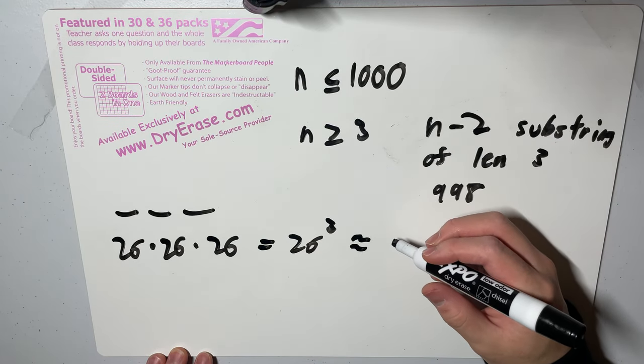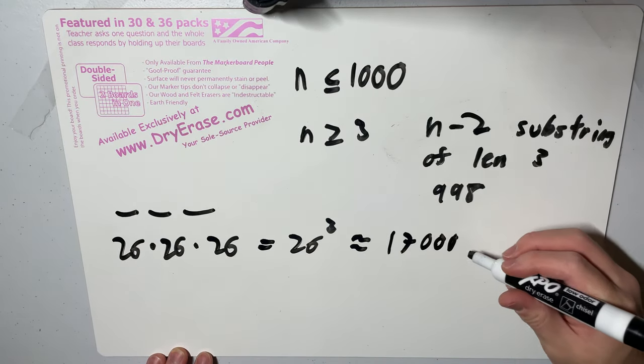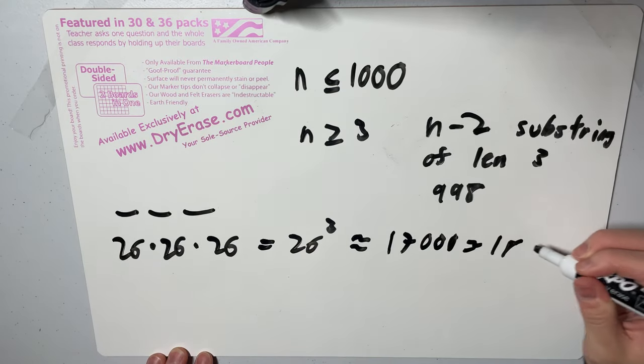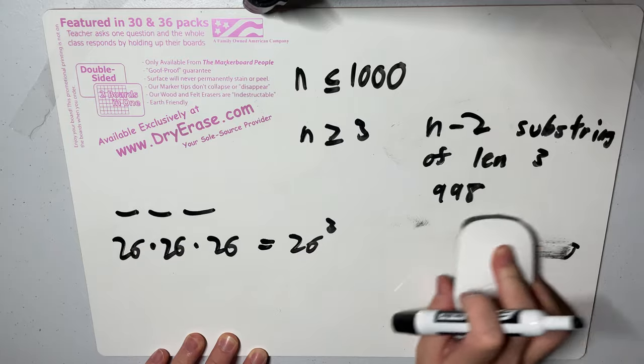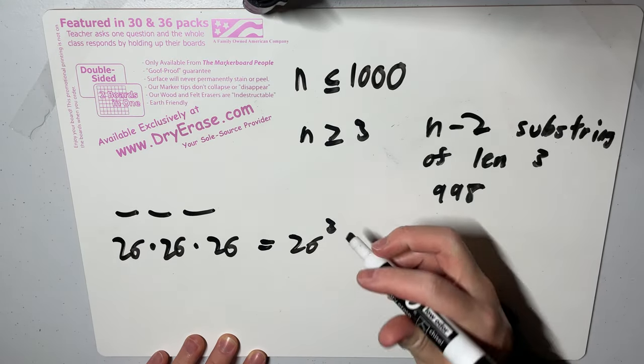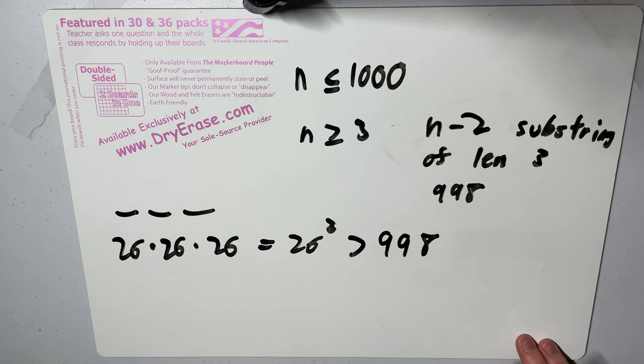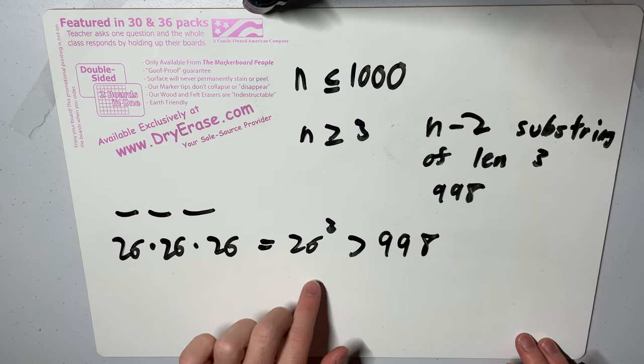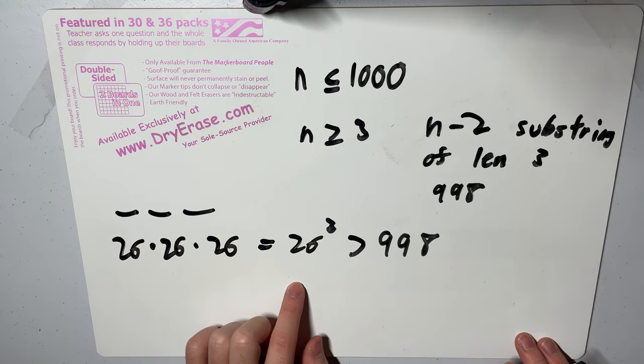And this is roughly, if I remember correctly, like roughly like 17,000 or 18,000, something like that. But the point is that this number is always strictly greater than 998.